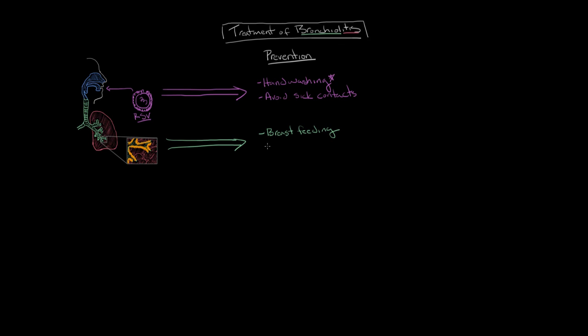Another thing you can do is to prevent smoke exposure. Secondhand smoke exposure causes an underlying low level of inflammation in the respiratory tract. So children who are exposed to secondhand smoke are at an increased risk of developing an RSV infection if they are exposed to RSV because they already have some inflammation going on in their bronchioles.